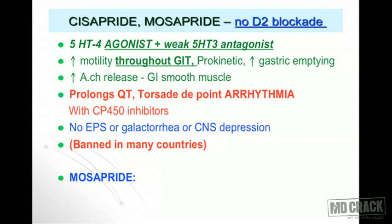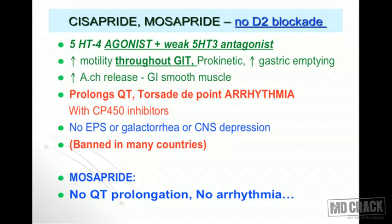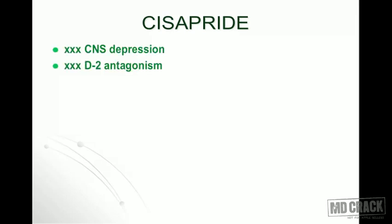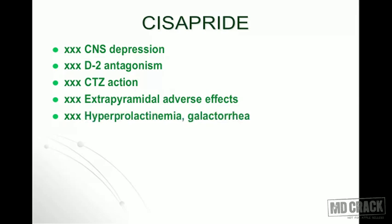Mosapride is a cisapride alternative that does not produce QT prolongation and no arrhythmia, so it is the preferred agent from this group. Importantly, cisapride and mosapride produce no CNS depression, no D2 antagonism, no action on the chemoreceptor trigger zone, no extrapyramidal adverse effects, and no hyperprolactinemia or galactorrhea. The only problem with cisapride was cardiac arrhythmia. We now use mosapride instead.